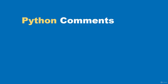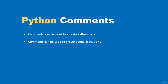Python comments can be very useful. They can be used to explain your Python code to yourself and others. Comments can also be used to prevent execution of code when testing — you can comment out code you don't want to run during execution, which is useful during testing. There are two main types: single-line comments and multi-line comments.